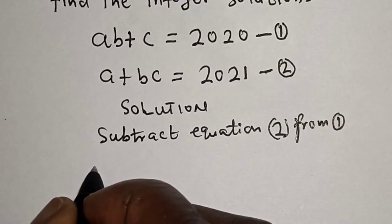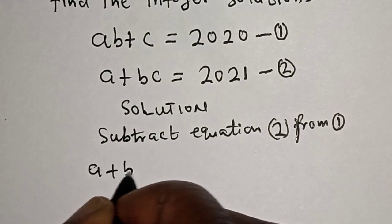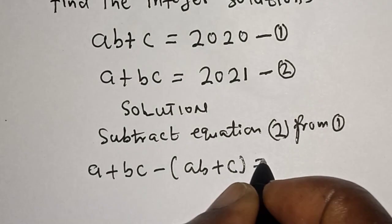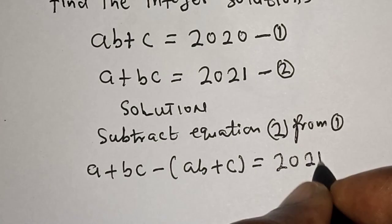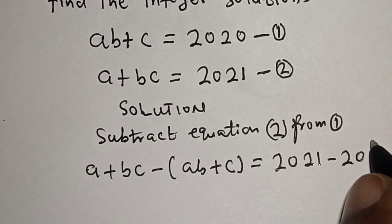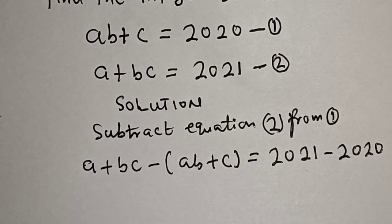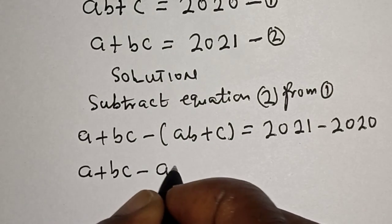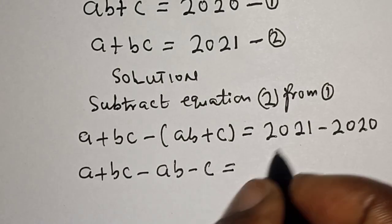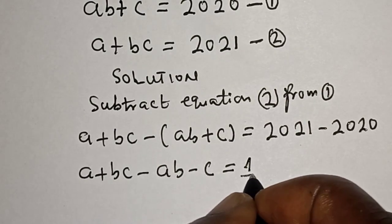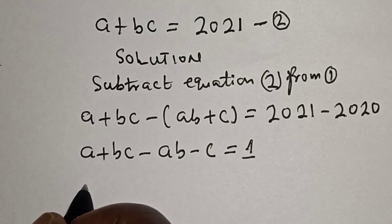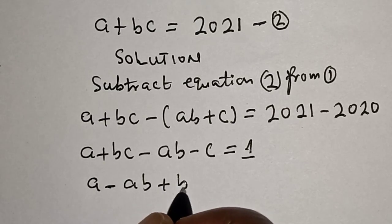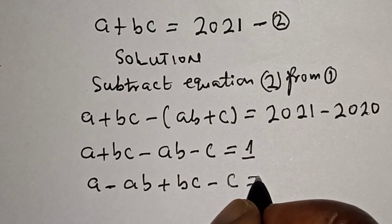Then A(B + C) minus (A + BC) is equal to 2021 minus 2020. Expanding: AB + AC minus A minus BC is equal to 1. Rearranging: A minus AB + BC minus C is equal to 1.